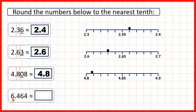Finally, we have 6.464. We can find our tenths digit — again it's always the first digit after the decimal point. We can underline our hundredths, and because we have a 6, we know that we're rounding up. So the tenths digit increases by 1, going from 4 to 5. Digits to the left stay the same, so we have 6.5, because if we're rounding to the nearest tenth, we don't write any digits after the tenths digit. So we only have one decimal place in our answer.